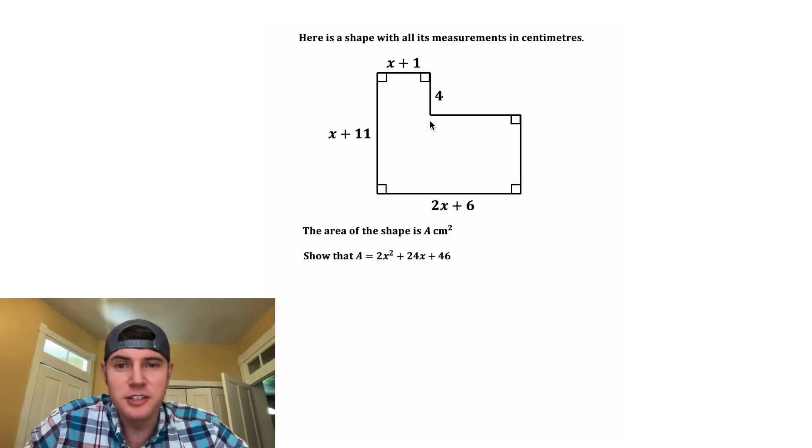So I'm thinking first let's cut this into two parts. Now we've split it into two rectangles. The area of a rectangle is base times height. So for this one up here, it'd be 4 times x plus 1.